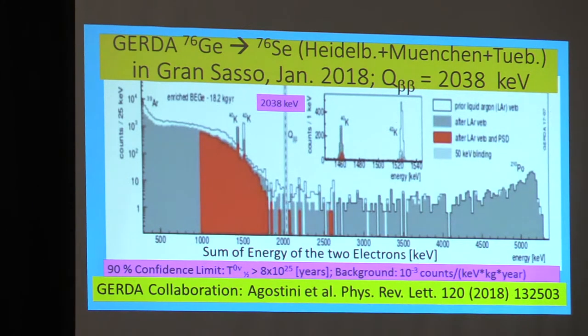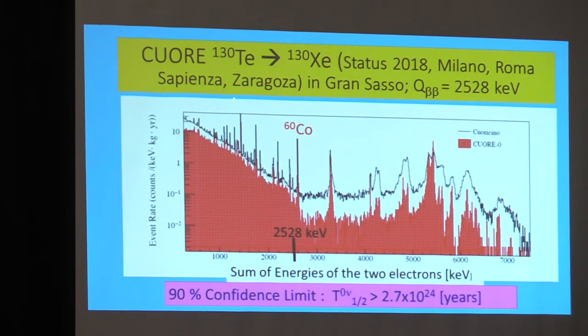Let's have a look to an experiment from the Milano group. That is also in the Gran Sasso, where the Milano group, Sapienza and Zaragoza are involved. The Q-value is here 2528 keV, from tellurium-130 to xenon-130, and the 2528 keV is here. Here is the sum of the two electron energies. And for the neutrinoless double beta decay, the two electrons get the full energy, and you should have a peak here. This is not a peak. That is a peak from contamination, from cobalt. One also does not see here the peak. So, at the moment, the situation is still open. We do not know if the neutrino is Majorana or the neutrino is Dirac.